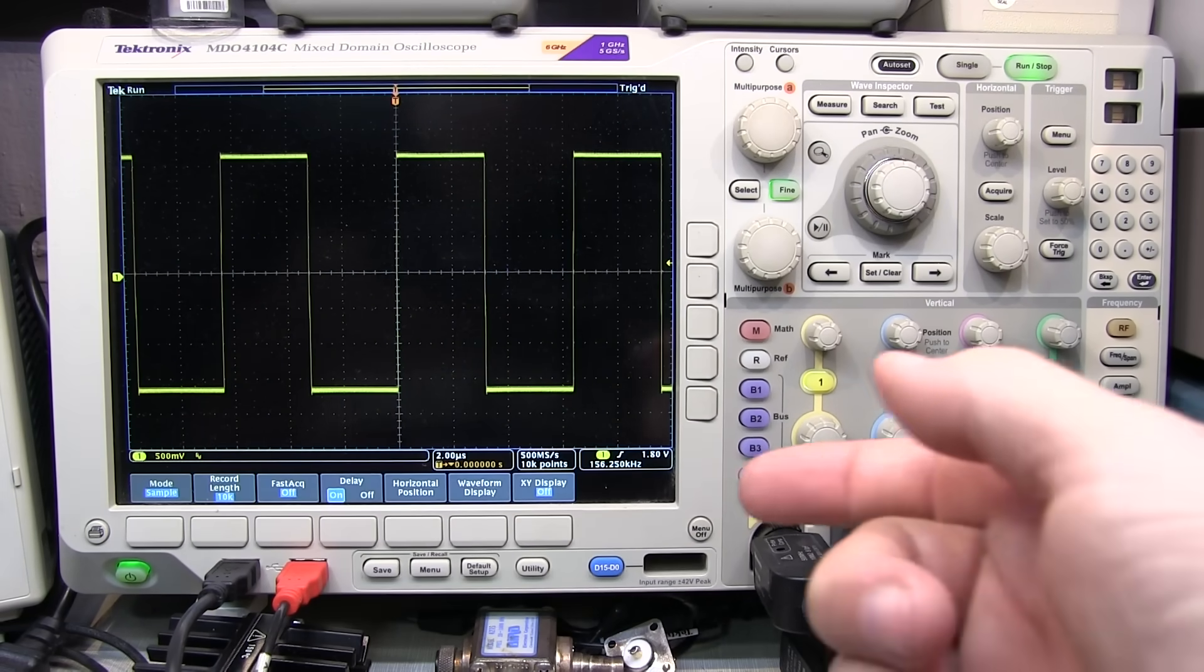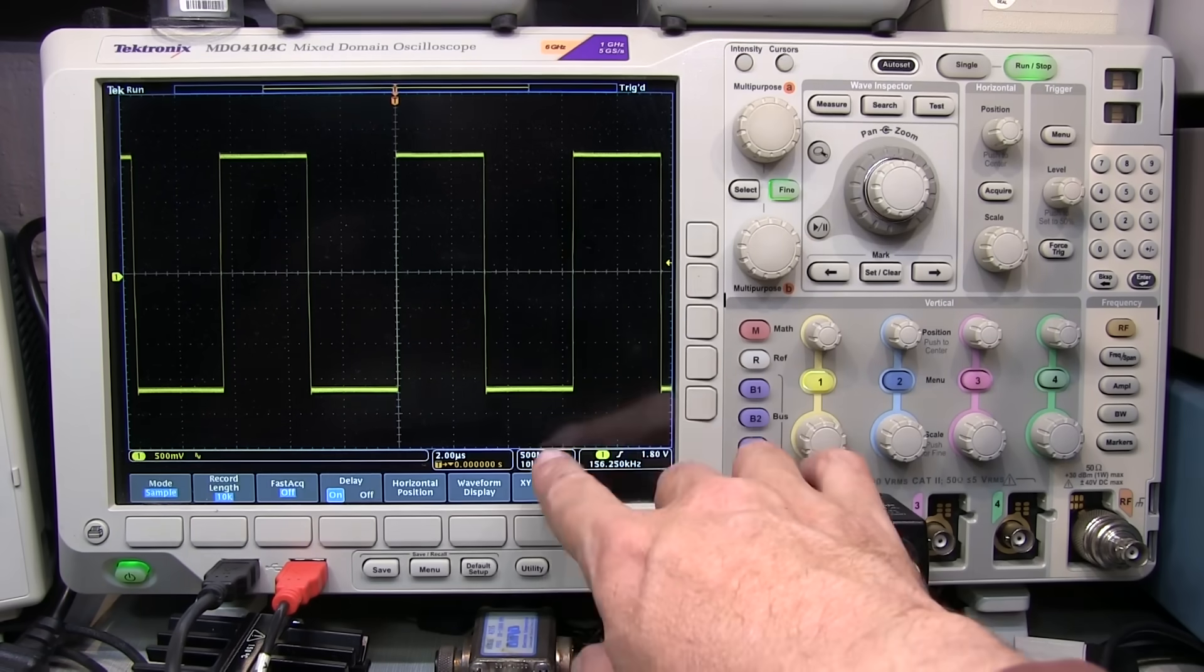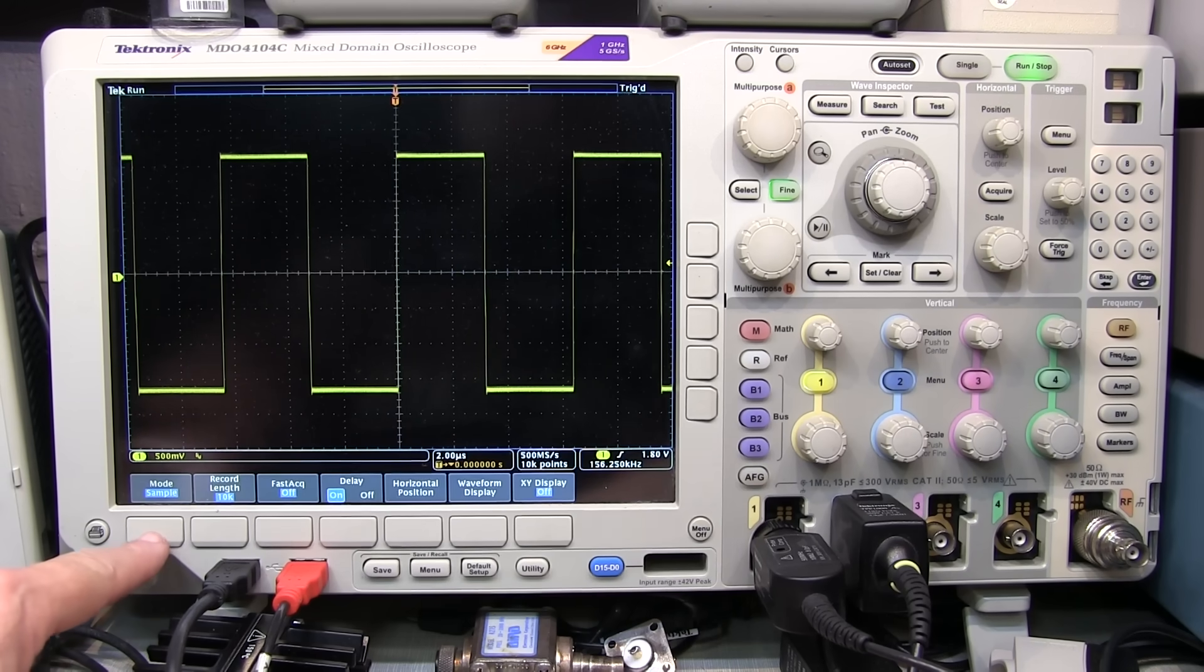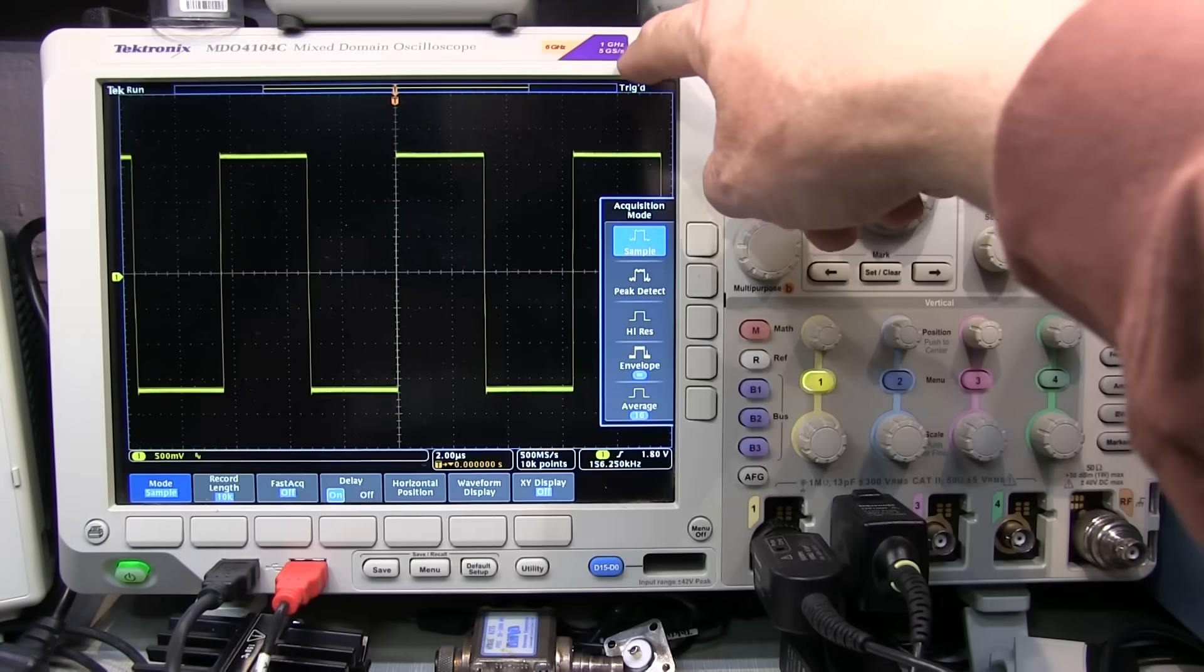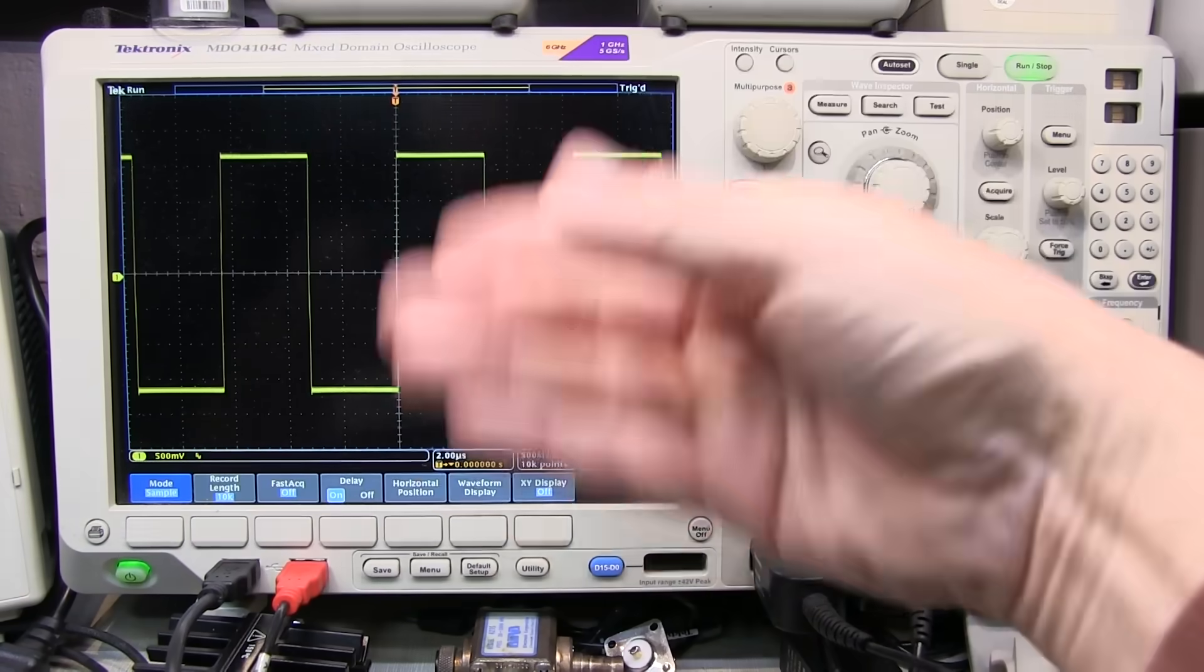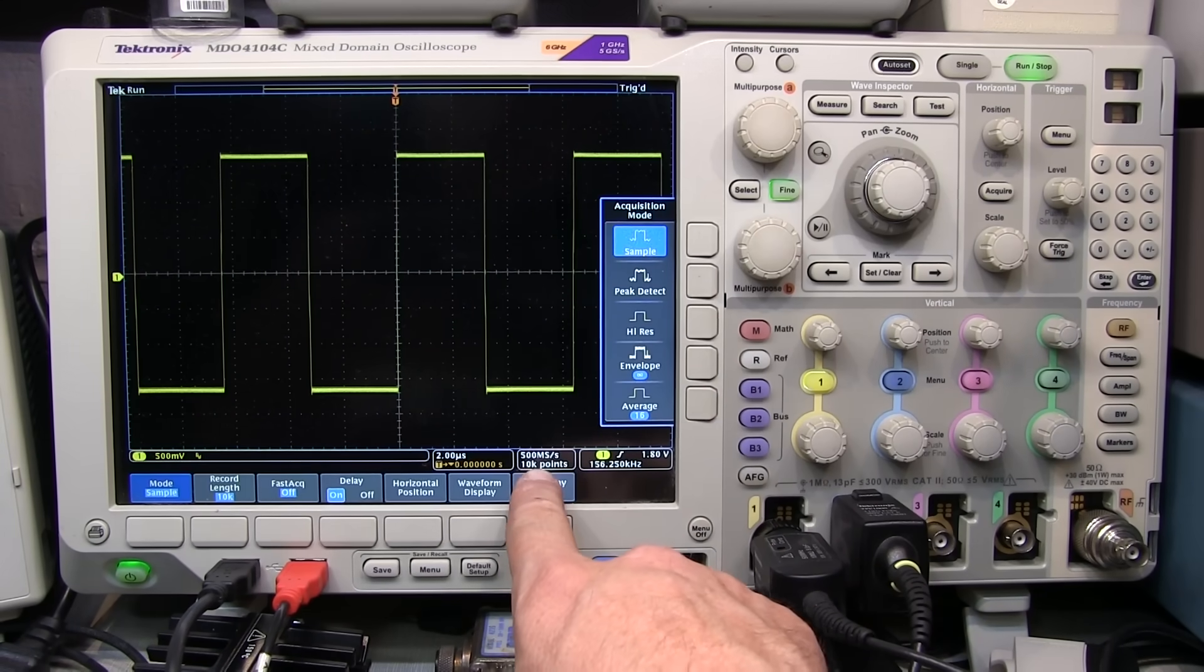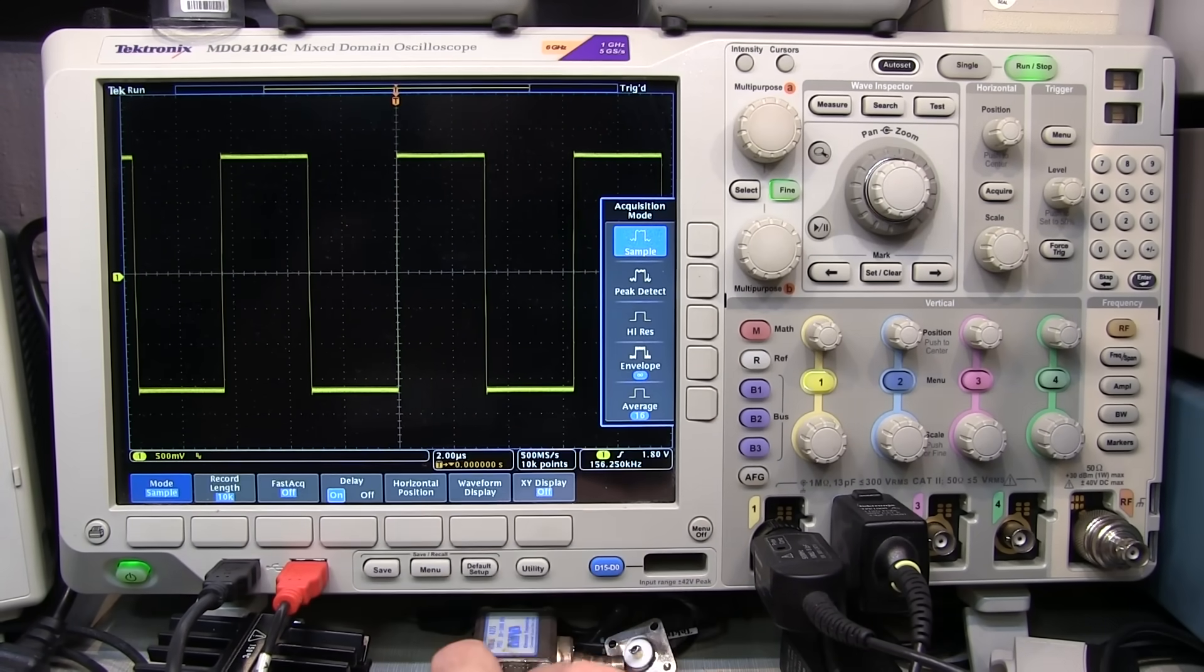The other thing to keep in mind especially when the sample rate is getting reduced is to consider what the sample mode is. So most will default to what's called the sample mode, which as I've described, is sampling at the full five giga sample per second, but essentially throwing away samples in order to fill the record length that you asked for for the record duration you asked for. That's what sample mode does.